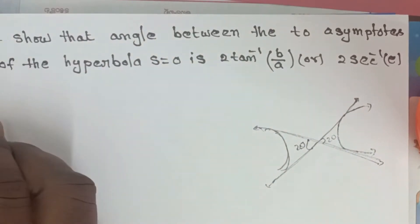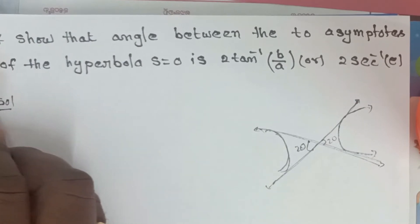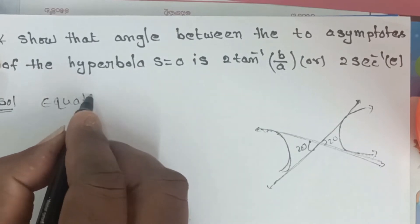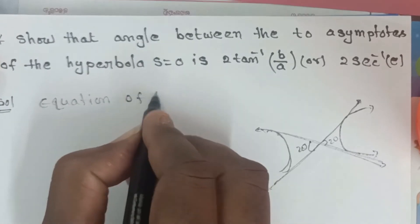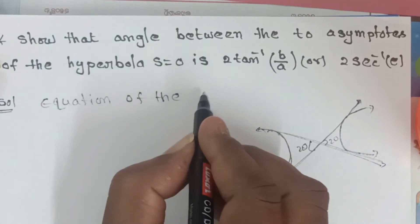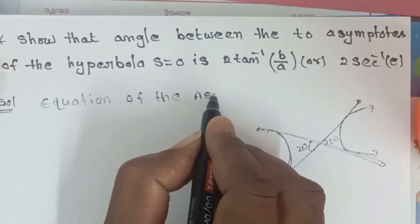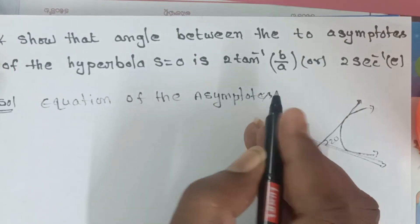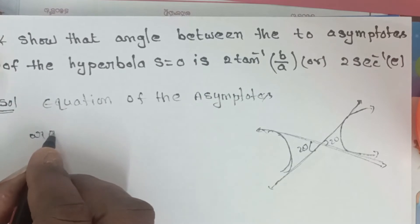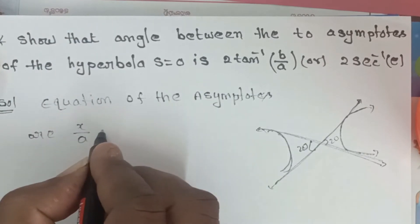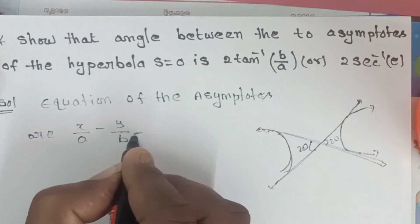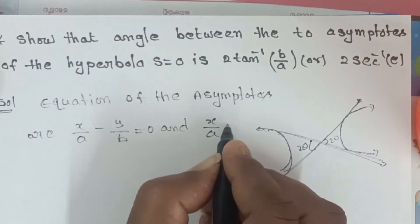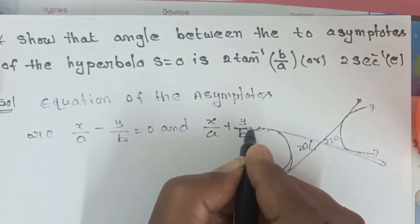Okay, so the solution: the equations of the asymptotes are x/a − y/b = 0 and x/a + y/b = 0.